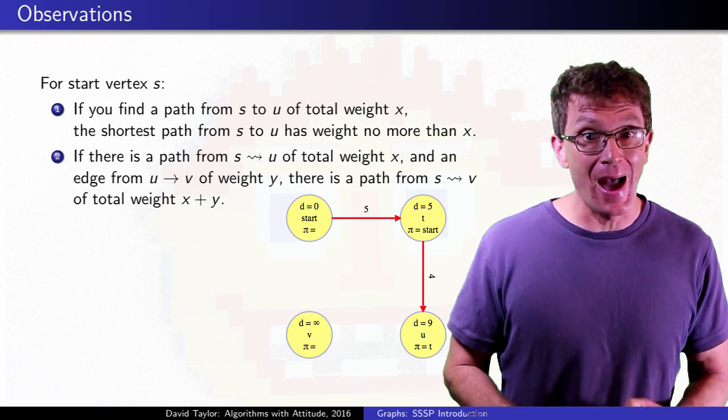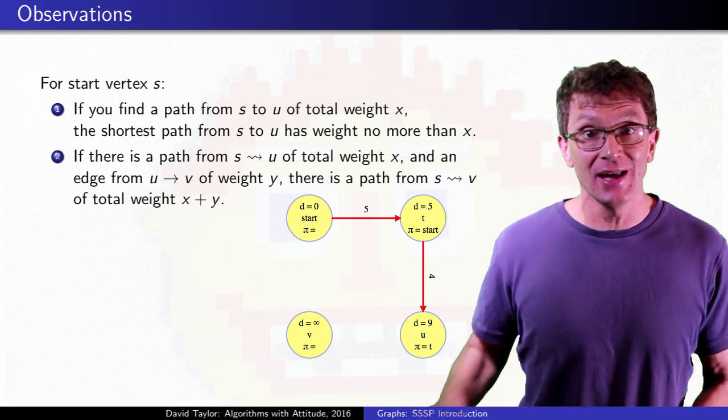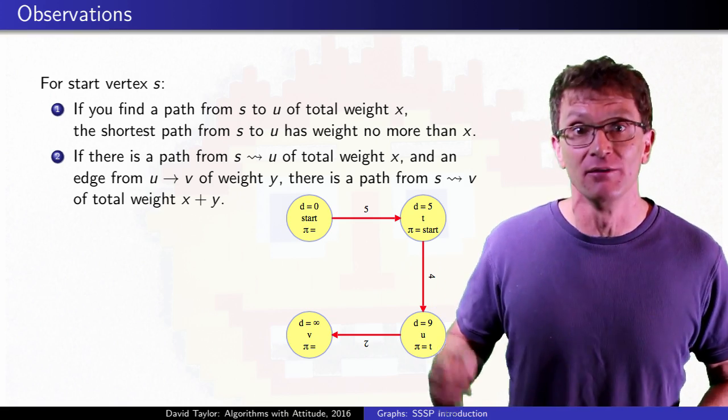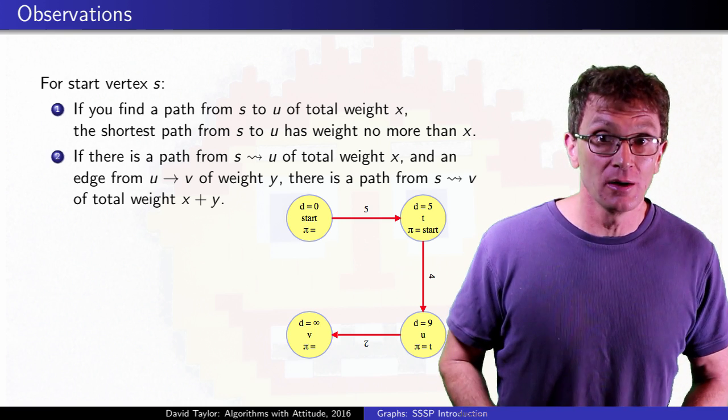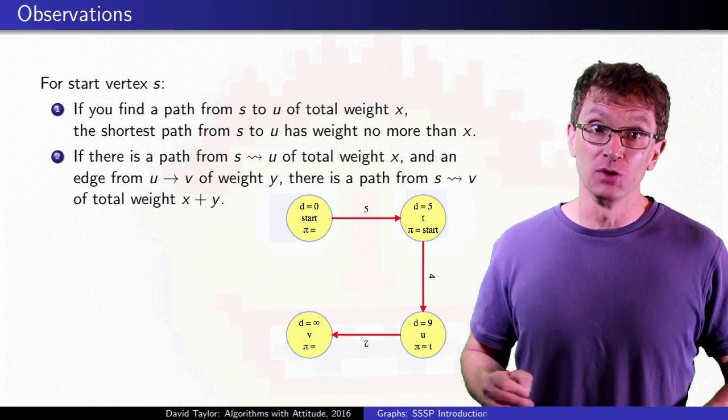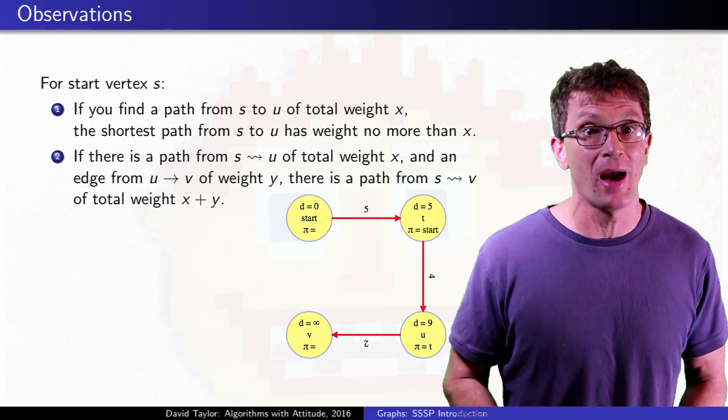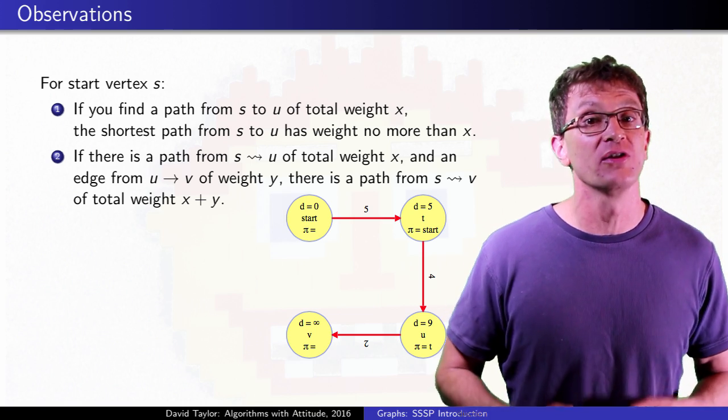Next, if there is a path and you add an edge to the end of it, it makes a new path to the vertex at the end of the new edge. So here, if we consider an edge of weight 2 from U to V, it is a new path, and it tells us that the shortest path to V is no more than 11.